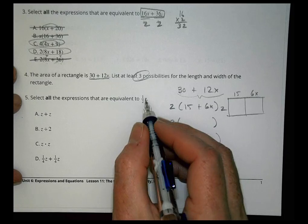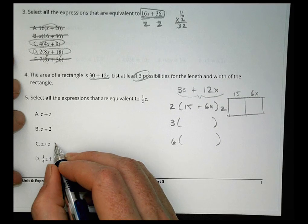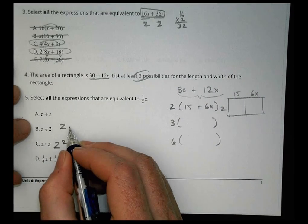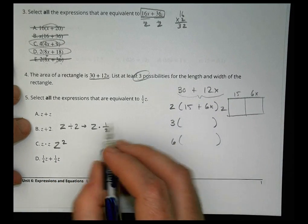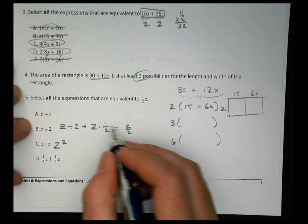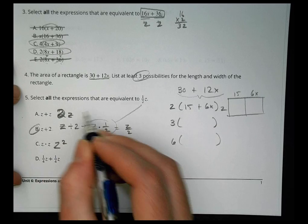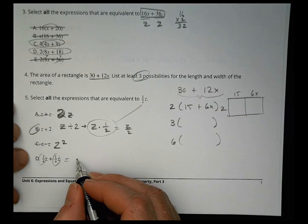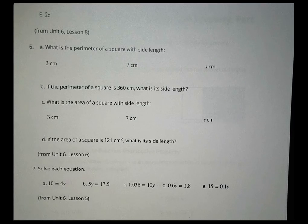Number 5. Select all expressions equivalent to 1/2 of z. It's not z times z. That's z squared. z divided by 2. I'll think about this here. This is z divided by 2, which becomes z times the reciprocal 1/2, which is z over 2, or what's right there. So that matches. z plus z is 2z, so that's not going to work. And a quarter z plus a quarter z actually equals a half of a z. That would work as well.